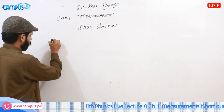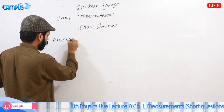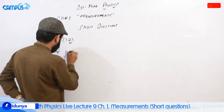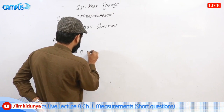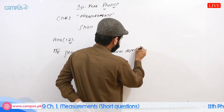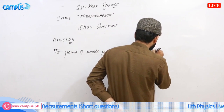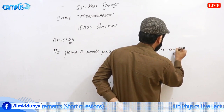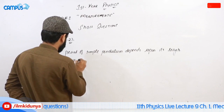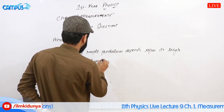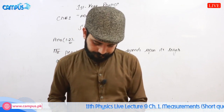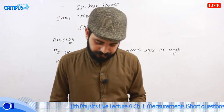Answer 1.2: The period of the simple pendulum depends upon its length and the value of gravitational acceleration g at any place. The period of a pendulum of fixed length may be different at different places.